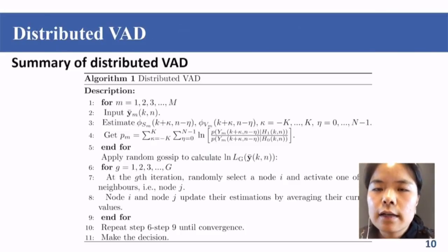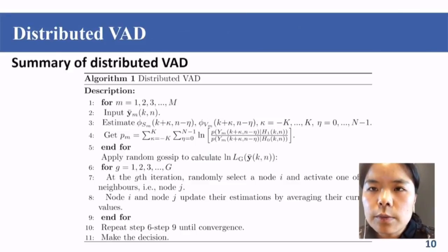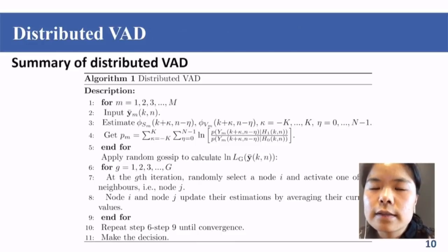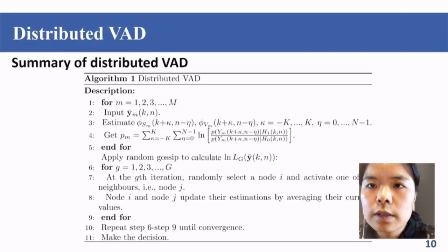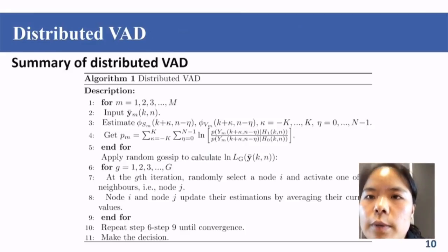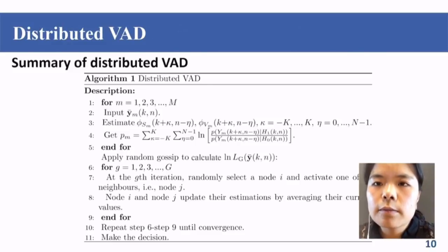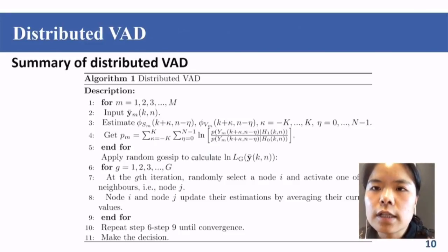To summarize the whole system: at each node, we estimate the speech power spectral density and the noise PSD locally. After obtaining the signal PSDs, we compute the local information PM. We then apply the random gossip method to average PM across the whole network. This allows us to obtain the log-GLRT function locally at each node, and then set a threshold at each node to make decisions locally.